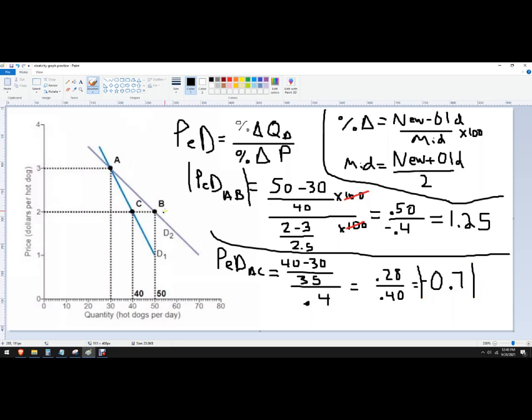So now I can look at the two and see that this number is above one. So this A to B is relatively elastic and A to C is less than one. It's 0.7. So it's relatively inelastic. That's how to solve two different elasticities off of the same graph.